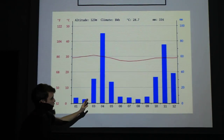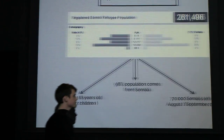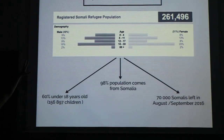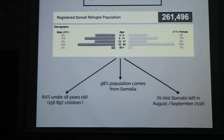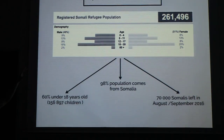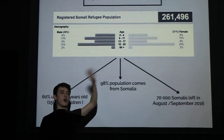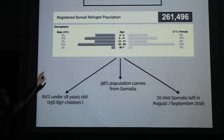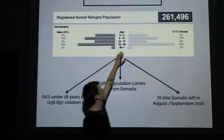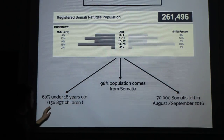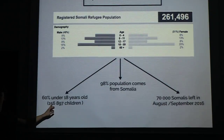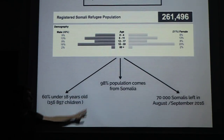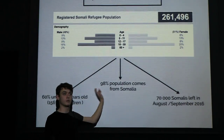We decided to build the school during June and September. For population data, from the UN as of September 2016, there are about 260,000 people there, and 60% of them are under 18 — meaning around 156,000 children in this camp, with 98% of the population coming from Somalia.